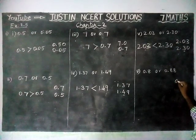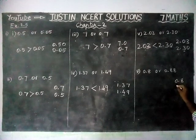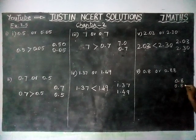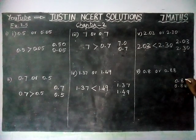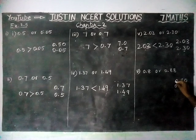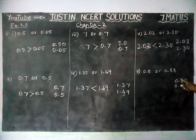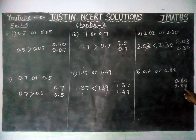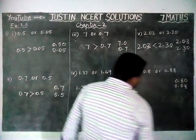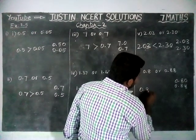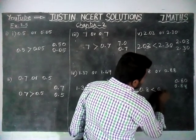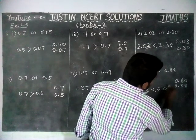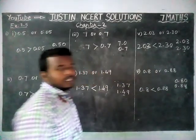Next: 0.8 and 0.88. We can write 0.8 as 0.80. Here the first digit is equal — both are 8. So we check the second digit: this is 0 and this is 8. By using the second digit, 0.88 is the greatest value. So the answer is 0.8 is less than 0.88.